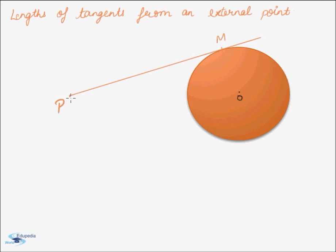Similarly, we can have another tangent on downward side. Let the point of contact be N.